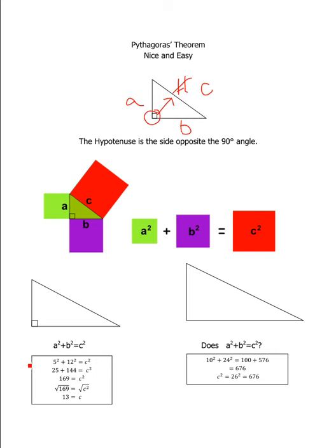To demonstrate Pythagoras' Theorem, I'd like to take you through two examples. This example down here, I'm going to say that this side over here is 5, and this side down here is 12. I'd like to know, what is the length of this side here, C?